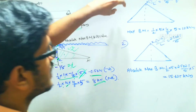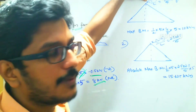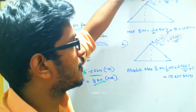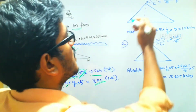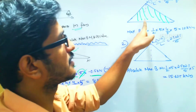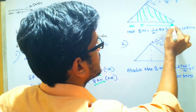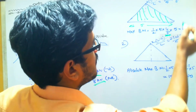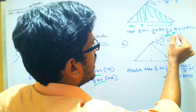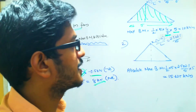Similarly, the maximum bending moment at the 1-meter point is found using the area under the bending moment ILD curve. That is: half multiplied by the beam span of 5, multiplied by the ordinate magnitude of 4 by 5, then multiplied by the UDL magnitude of 5. This gives a maximum bending moment of 10 kilo Newton meter.